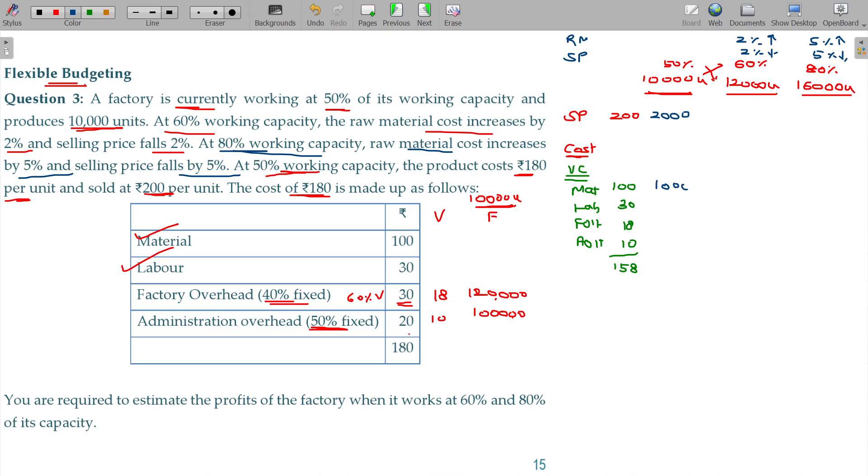1000, labour 300,000, 180,000, 100,000 rupees in thousands. And total being 158,000, 1,580,000.